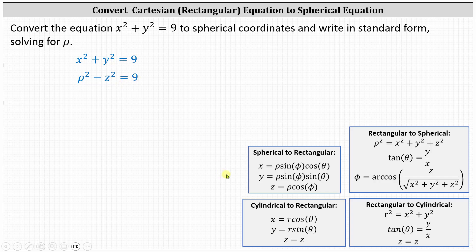Next, z equals rho cosine phi, and therefore z squared is equal to rho squared cosine squared phi. So now we have rho squared minus rho squared cosine squared phi equals nine.